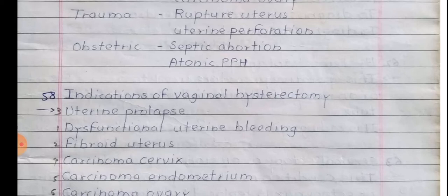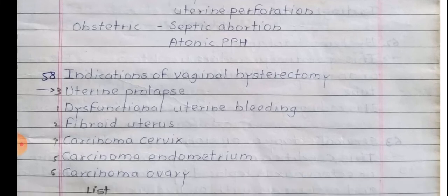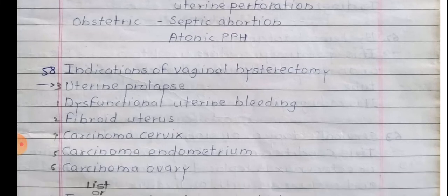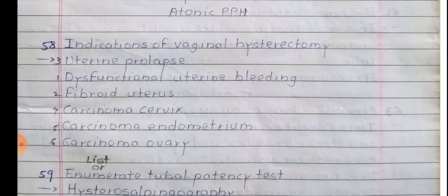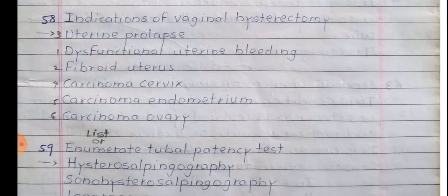Indications of vaginal hysterectomy: uterine prolapse, dysfunctional uterine bleeding, fibroid uterus, carcinoma cervix, carcinoma endometrium, and carcinoma ovary.